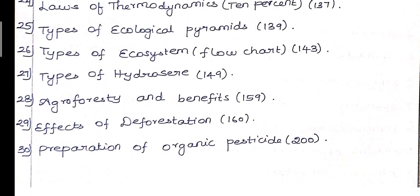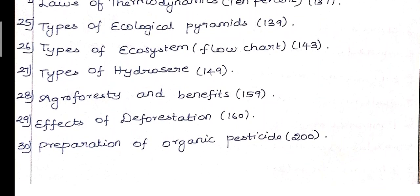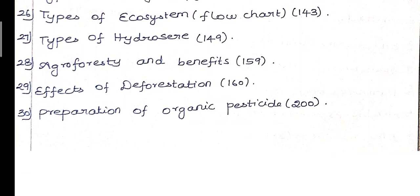Twenty-fifth question, Types of Ecological Pyramids, 139. Twenty-sixth question, Types of Ecosystem, only the flow chart, 143. Twenty-seventh question, Types of Hydrosere, 149.